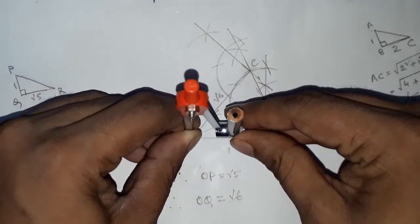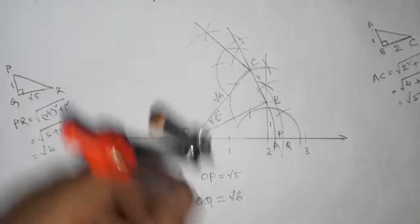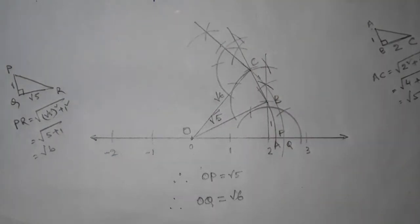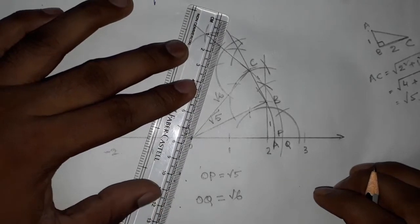Now taking the length between any two numbers and putting the compass here and cutting here. Okay, next joining this.